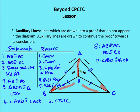Next, we draw auxiliary line segment AD. The reason is: two points determine a line. Now we have two triangles — BDA and CDA. We state that AD is congruent to AD by the reflexive property. That gives us three pairs of congruent sides, so triangle BDA is congruent to triangle CDA by Side-Side-Side.